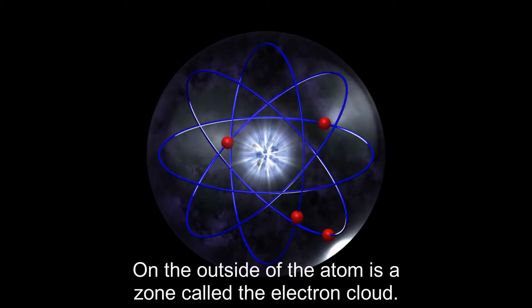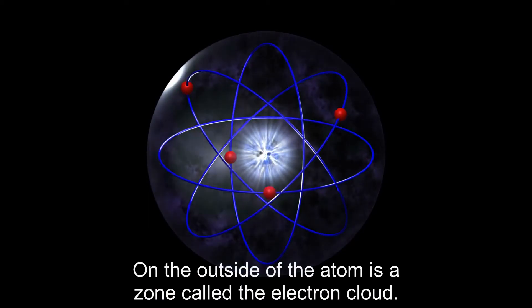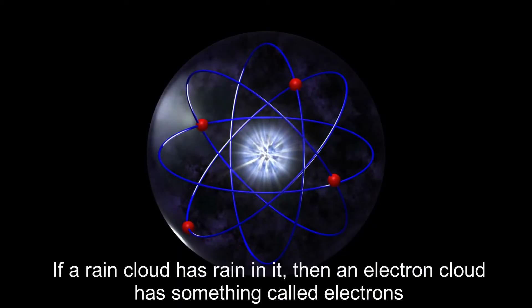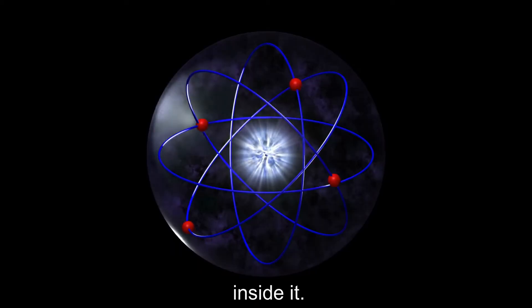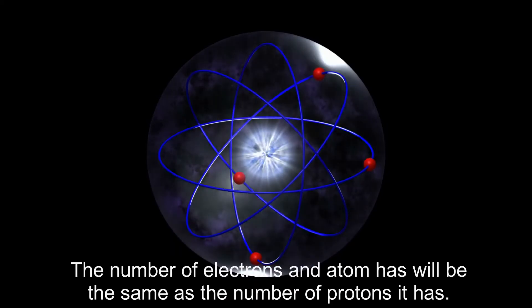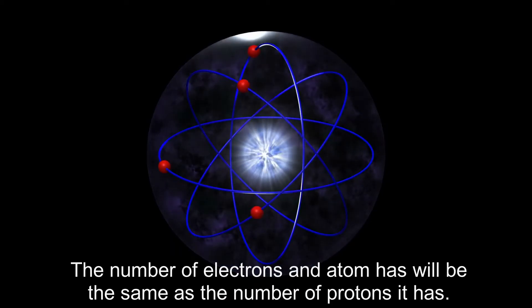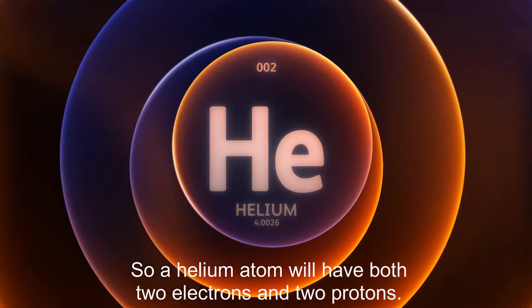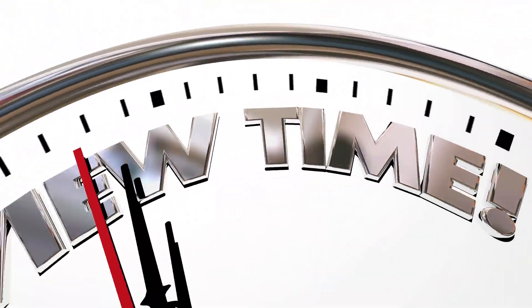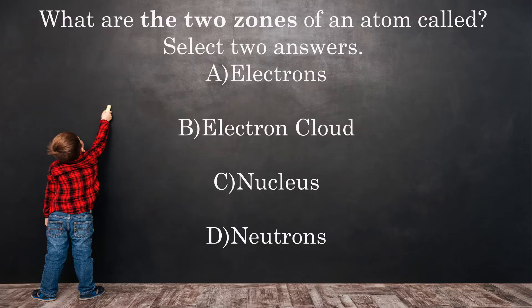On the outside of the atom is a zone called the electron cloud. If a rain cloud has rain in it, then an electron cloud has something called electrons inside it. The number of electrons an atom has will be the same as the number of protons it has. So a helium atom will have both two electrons and two protons. Before we talk about building models, can you remember what are the two zones of an atom called? Select two answers.